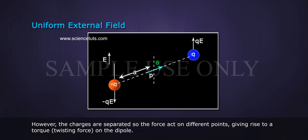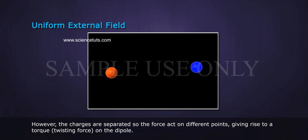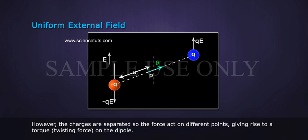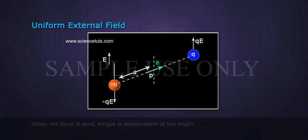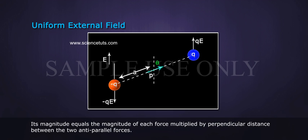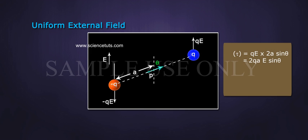However, the charges are separated, so their forces act on different points, giving rise to a torque, a twisting force on the dipole. When net force is zero, torque is independent of the origin. Its magnitude equals the magnitude of each force multiplied by perpendicular distance between the two antiparallel forces.